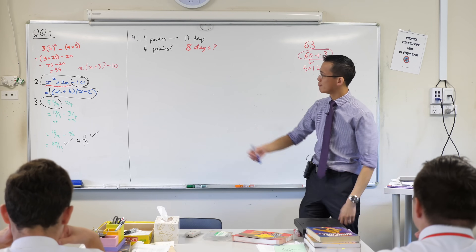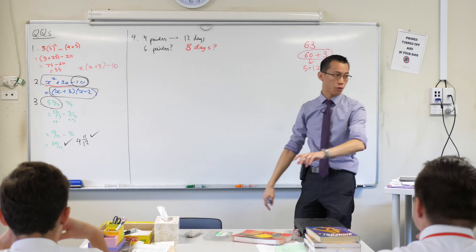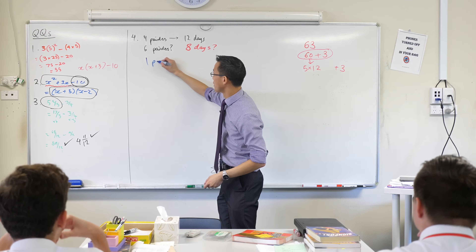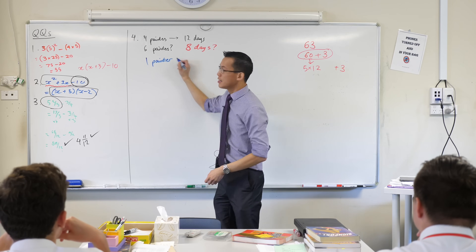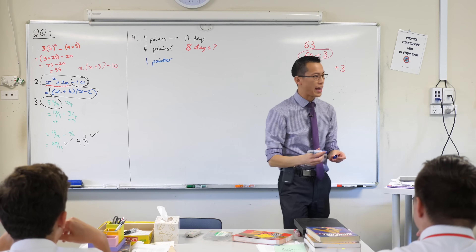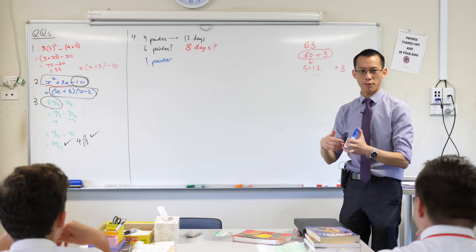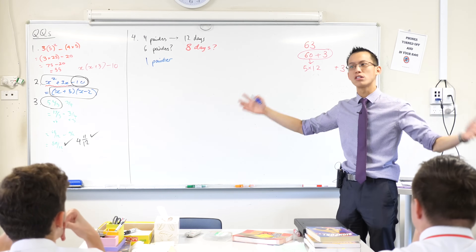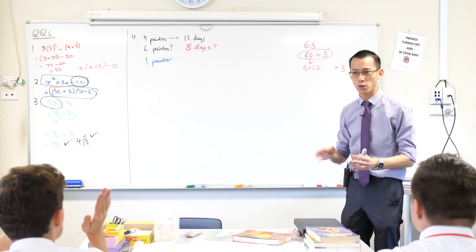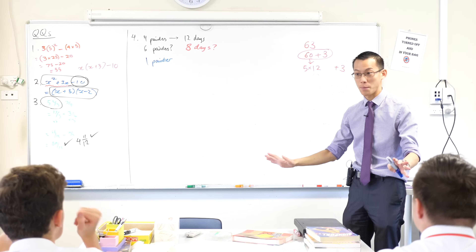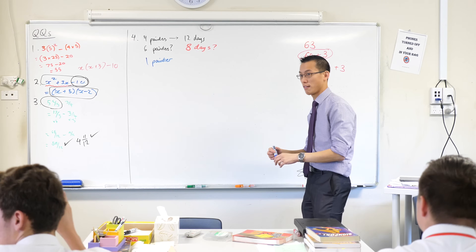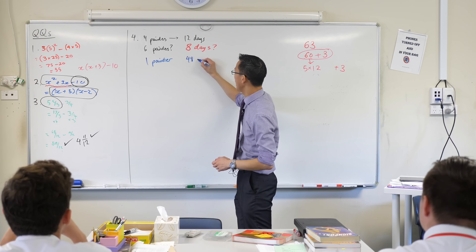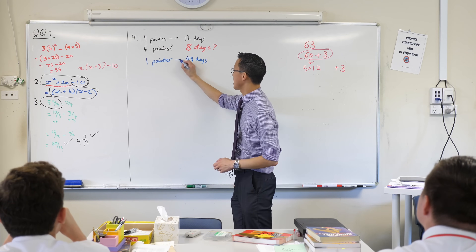Let's imagine you're one of the four painters and your three friends just ditched you, so now there's just one painter on the job. Let's assume you all work at the same pace. If there are four times fewer painters, how much longer is the whole task going to take? 48 days.